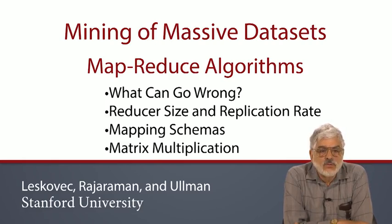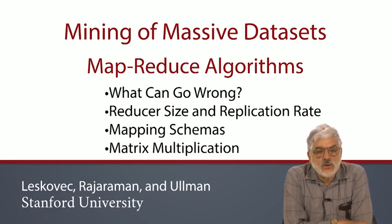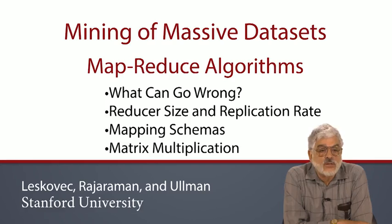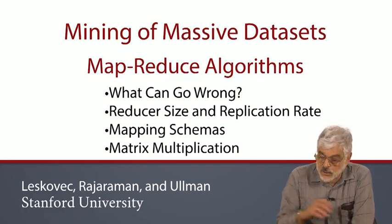I will then introduce what I think are the two key parameters of a MapReduce algorithm called reducer size and replication rate. There is an interesting trade-off between them, and good design is often a matter of picking the right point for the trade-off. We'll introduce mapping schemas as a way to define problems and get lower bounds on the reducer size as a function of replication rate.